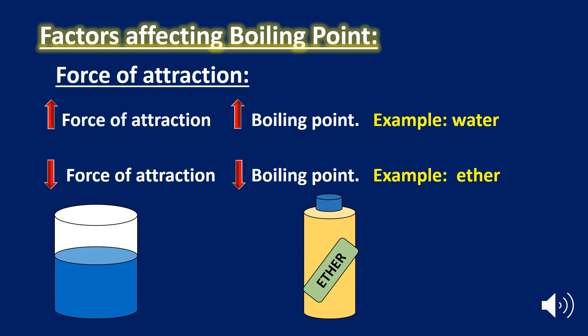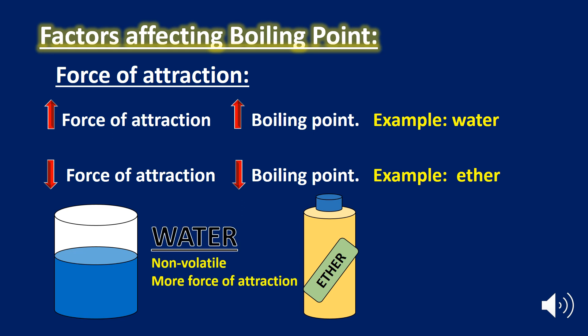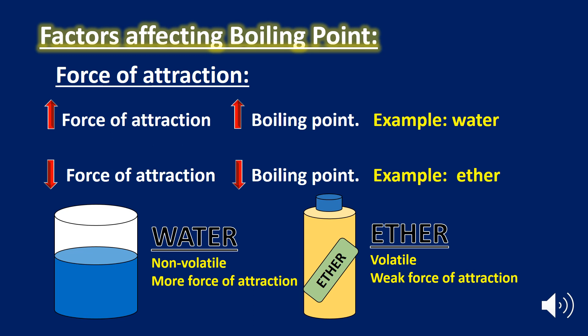Let's see examples of the force of attraction between molecules. In water, the force of attraction is stronger compared to ether, resulting in a high boiling point for water. Therefore water is non-volatile in nature. Ether, due to its weaker force of attraction, has a low boiling point and is volatile in nature.